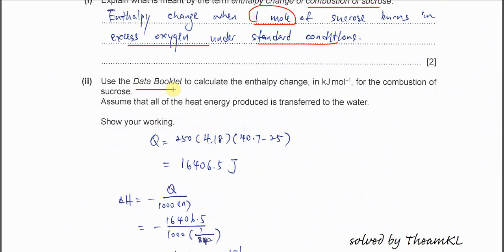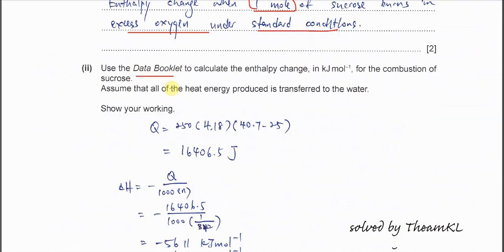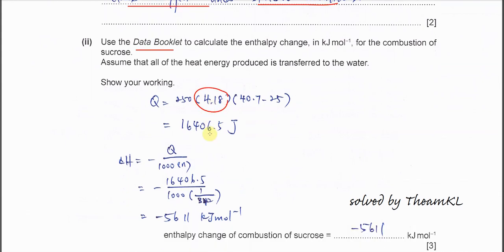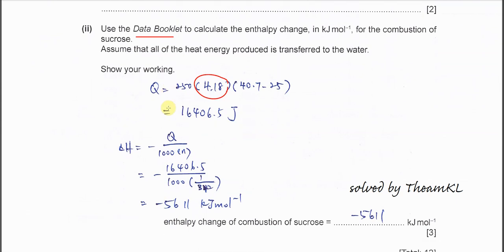Part two: use the data booklet. This one is in the old syllabus, data booklet needed. Normally the data booklet you need to use is this one. And of course use the data booklet to get the molar mass. First thing you need to do is calculate the Q, the energy first. Q equals MC delta T.